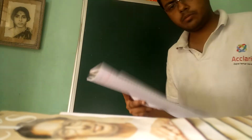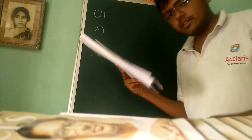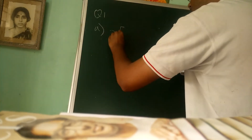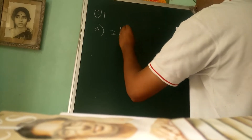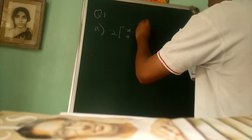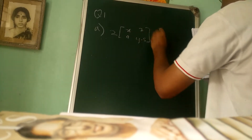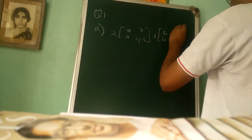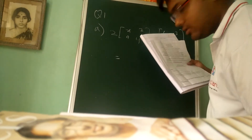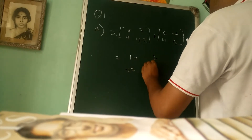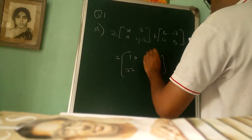Hello guys, so we come to question number 1 and question number 1a. It is a given matrix which is very easy. The given matrix is 2x, 9, 7y, -5+6, 4, -7, 5 and this is given equivalent to 10, 22, 7, and 15.